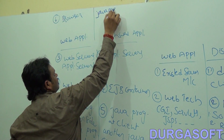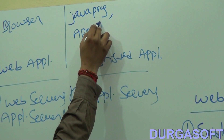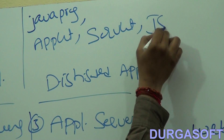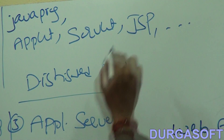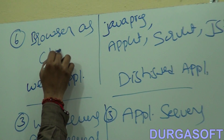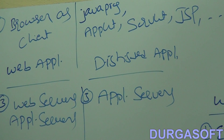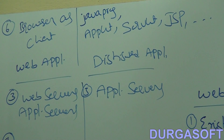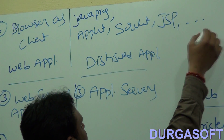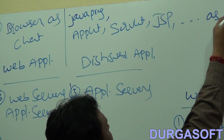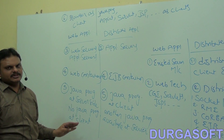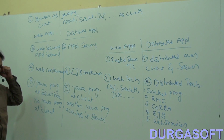In distributed applications, various types of clients are possible: a simple Java program, an applet, a servlet, or a JSP can all act as a client. In web applications, only the browser acts as the client. So these are the various differences between web applications and distributed applications.